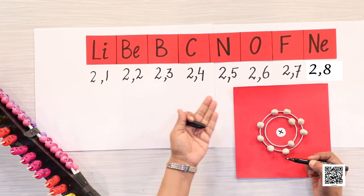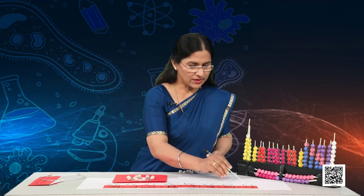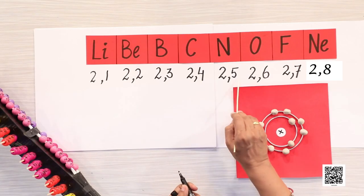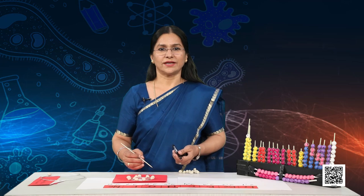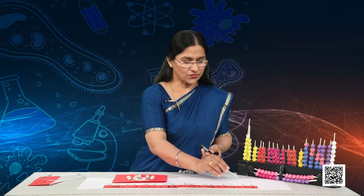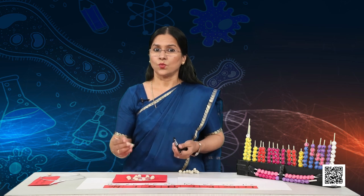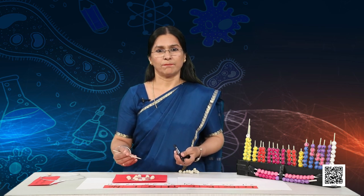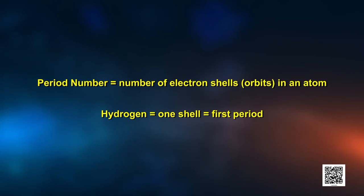Notice an interesting pattern: the elements of the second period do not have the same number of valence electrons. Valence electrons increase from 1, 2, 3, 4, 5, and so on, but they all contain the same number of shells. The number of valence shell electrons increases by one unit as the atomic number increases by one unit moving from left to right in a period. Also, the period number equals the number of electron shells in an atom.